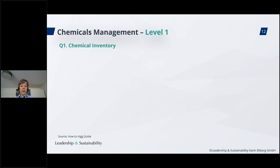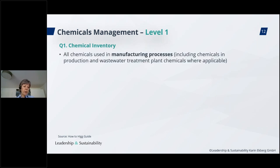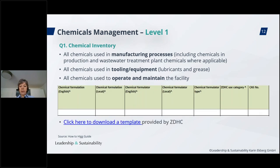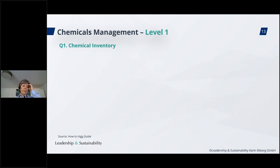We begin with developing the chemical inventory. All chemicals used in manufacturing processes should be listed, all chemicals used in tooling and equipment, and all chemicals used to operate and maintain the facility. There is a template made available by ZDHC and you can find it via the link provided. This is the foundation of your chemicals management. If you don't know which chemicals you are using, their hazard category, their CAS number, or the content of formulations, you will not be able to build a good chemical management system.